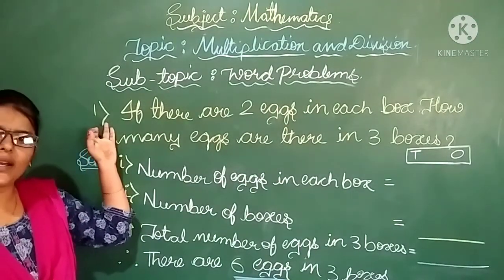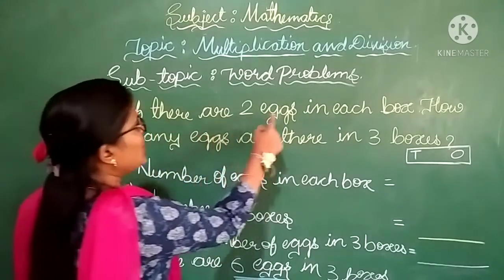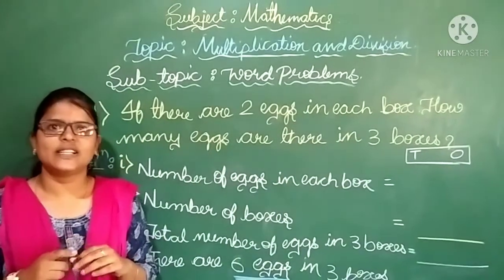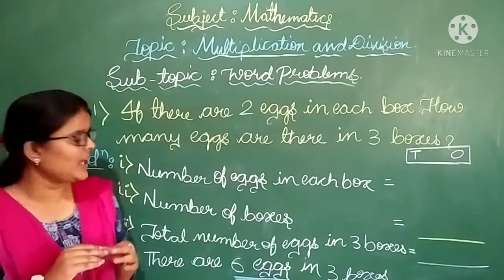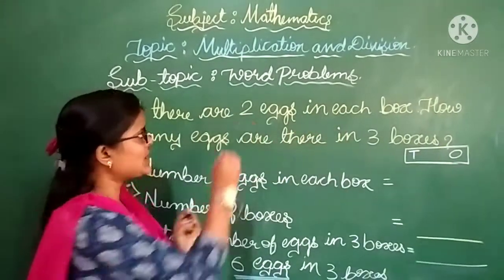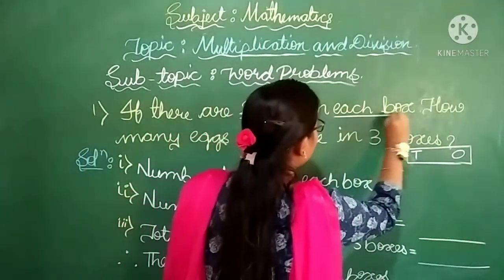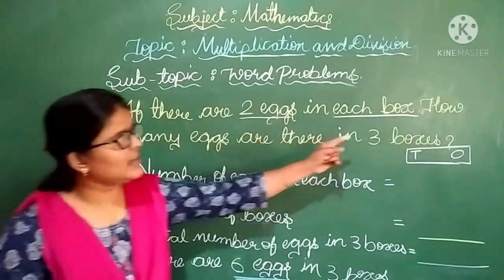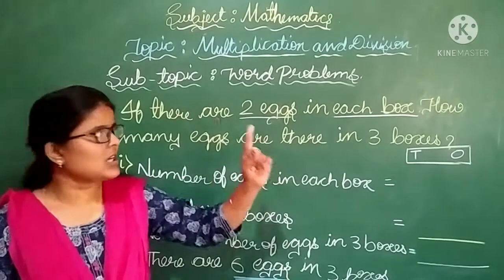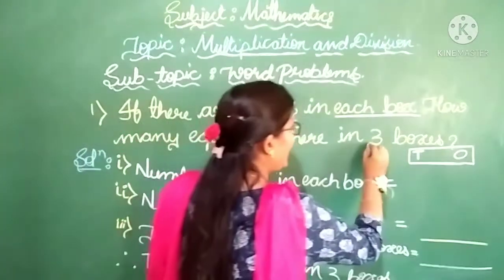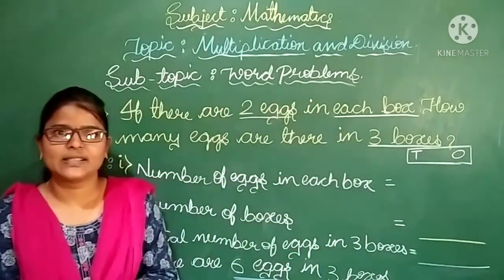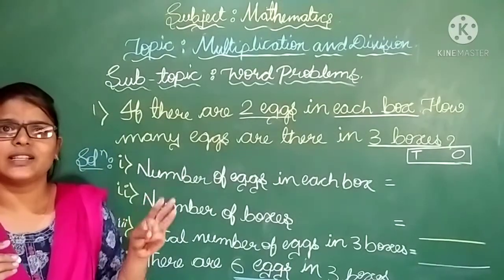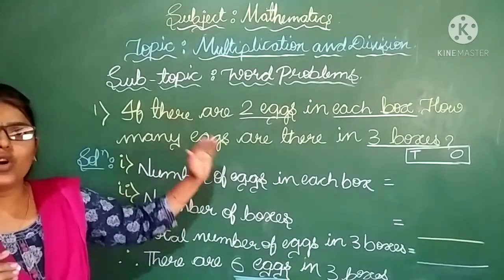Here is example number 1: If there are 2 eggs in each box, how many eggs are there in 3 boxes? In 1 box there are 2 eggs — in the same way, 3 boxes have how many eggs? Whenever you read the question, first read it twice or thrice. Until you understand the question, don't go to answer it.